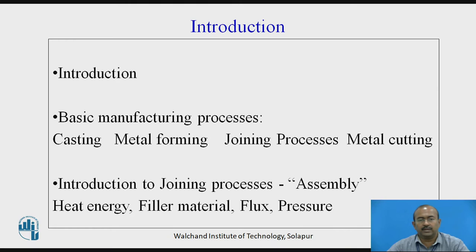In the introduction, let us focus on four basic manufacturing processes. To manufacture any element individually or in the form of an assembly, we are required to choose one of the basic manufacturing processes like casting, metal forming, joining processes, or metal cutting.